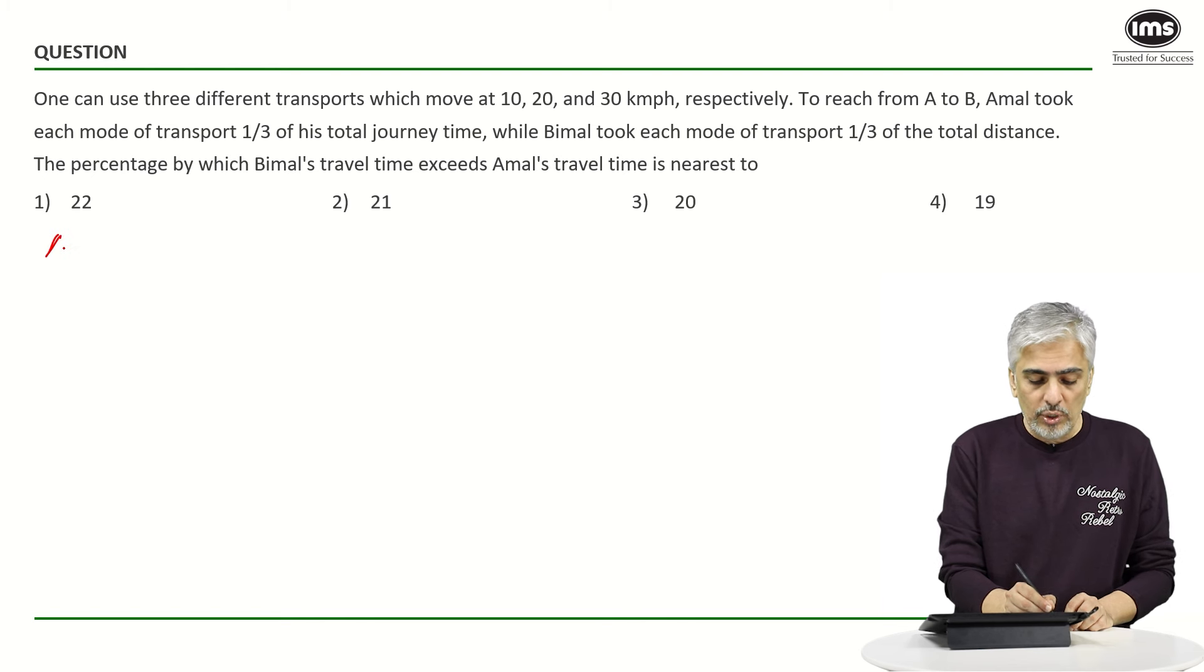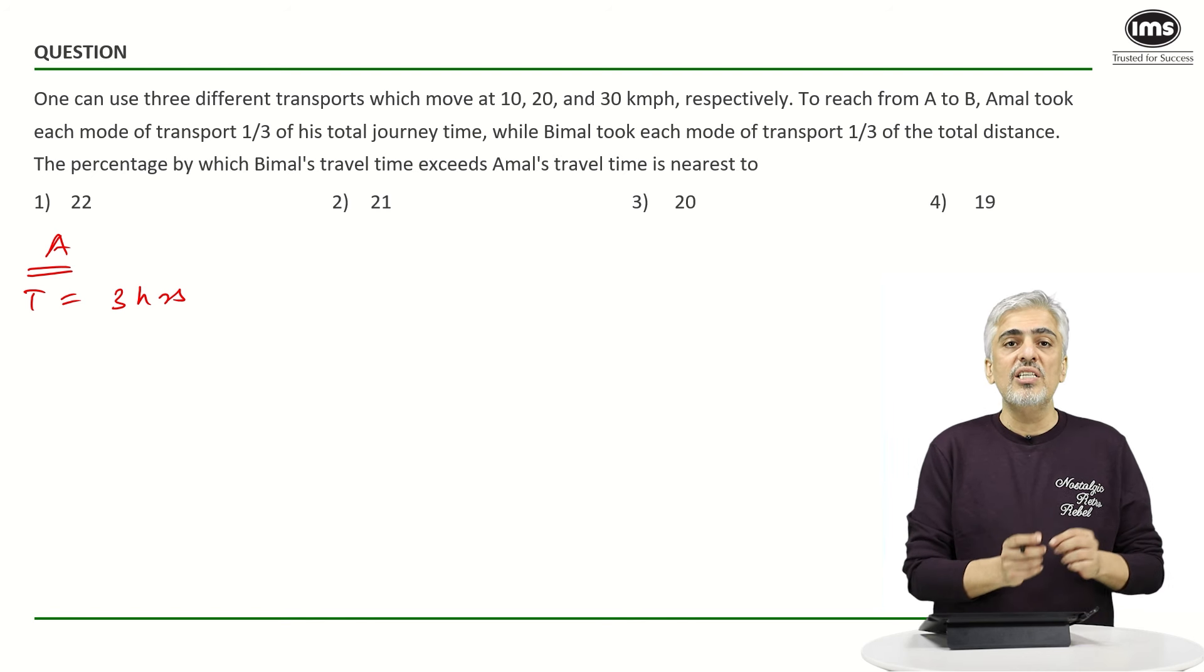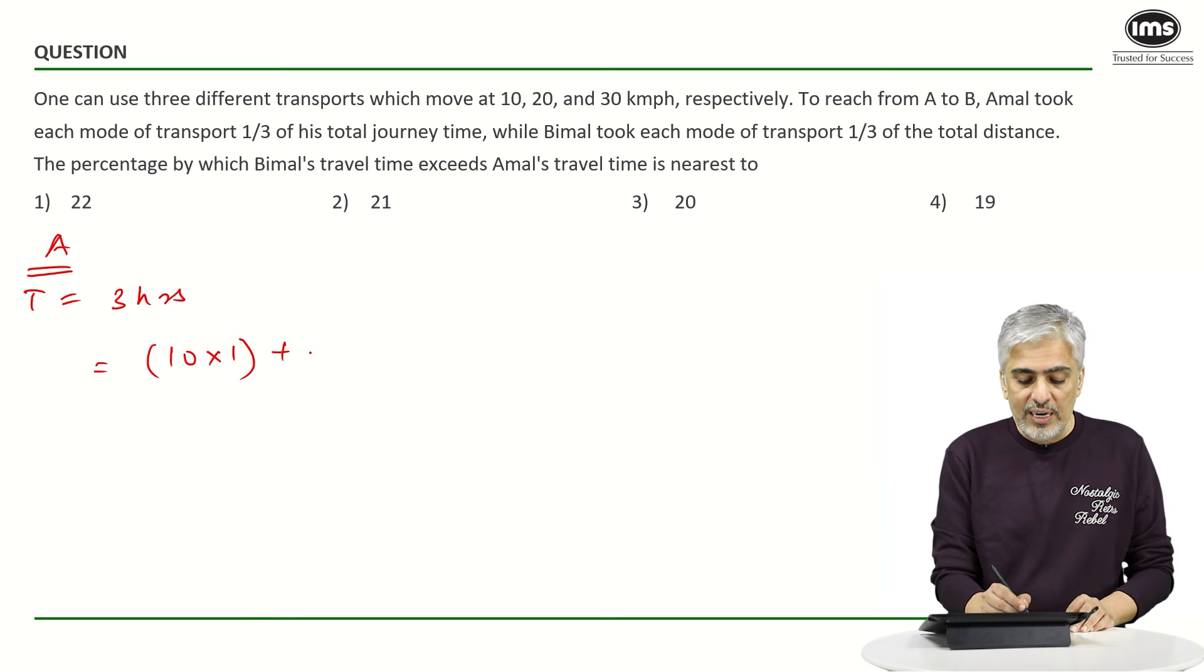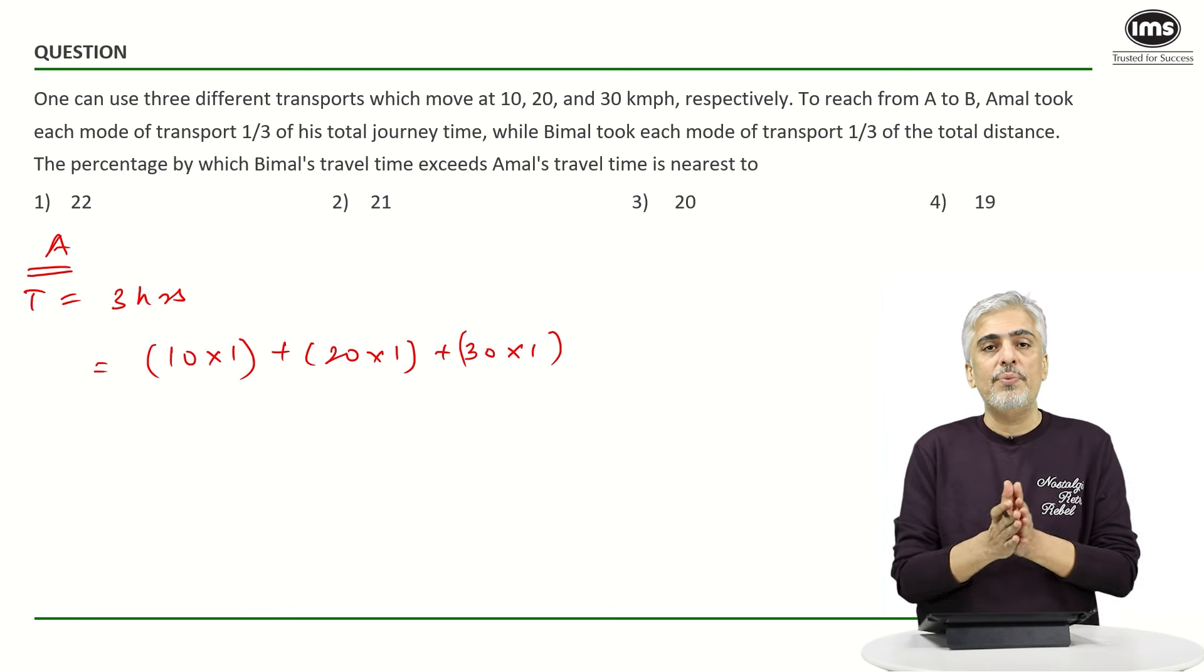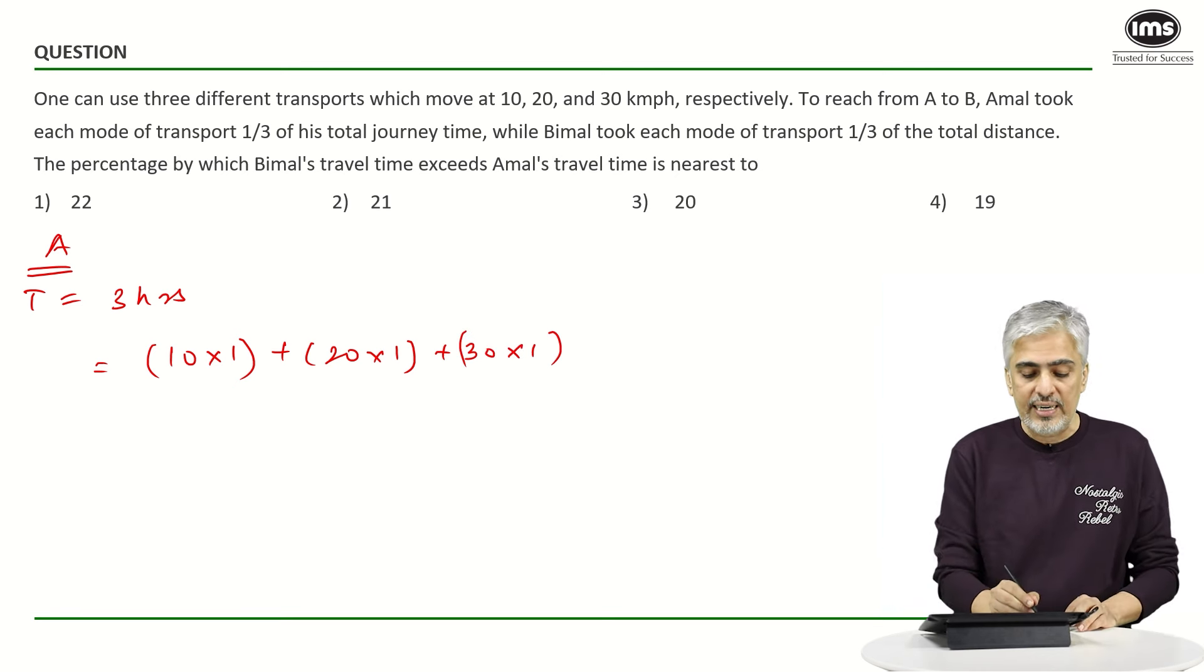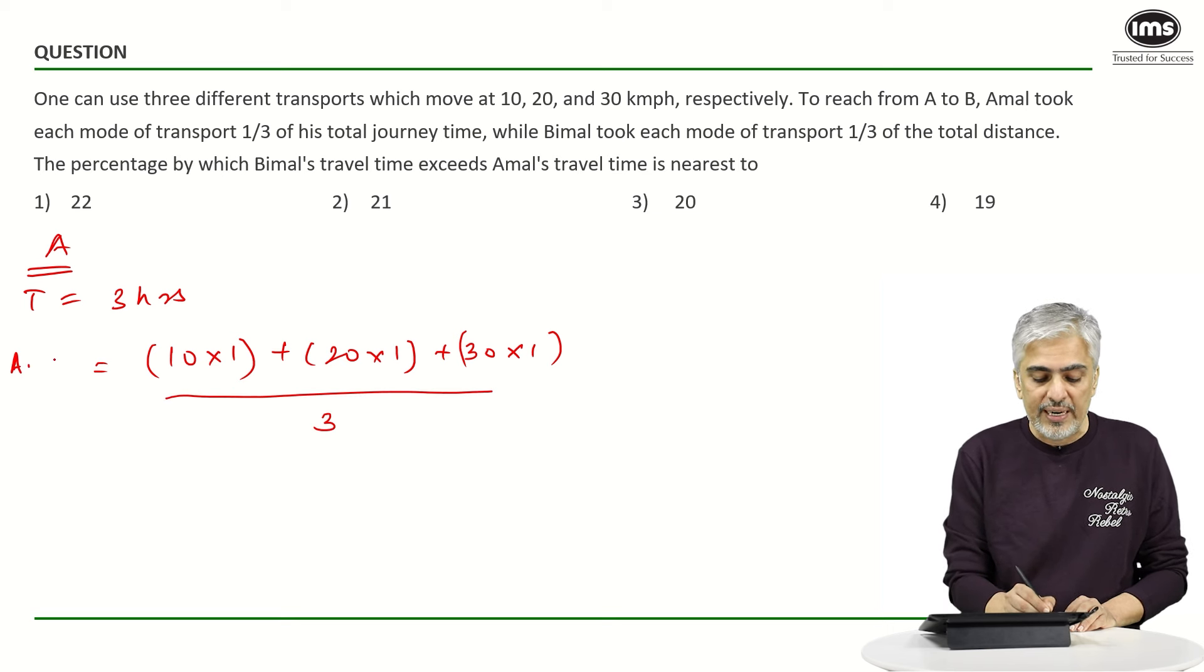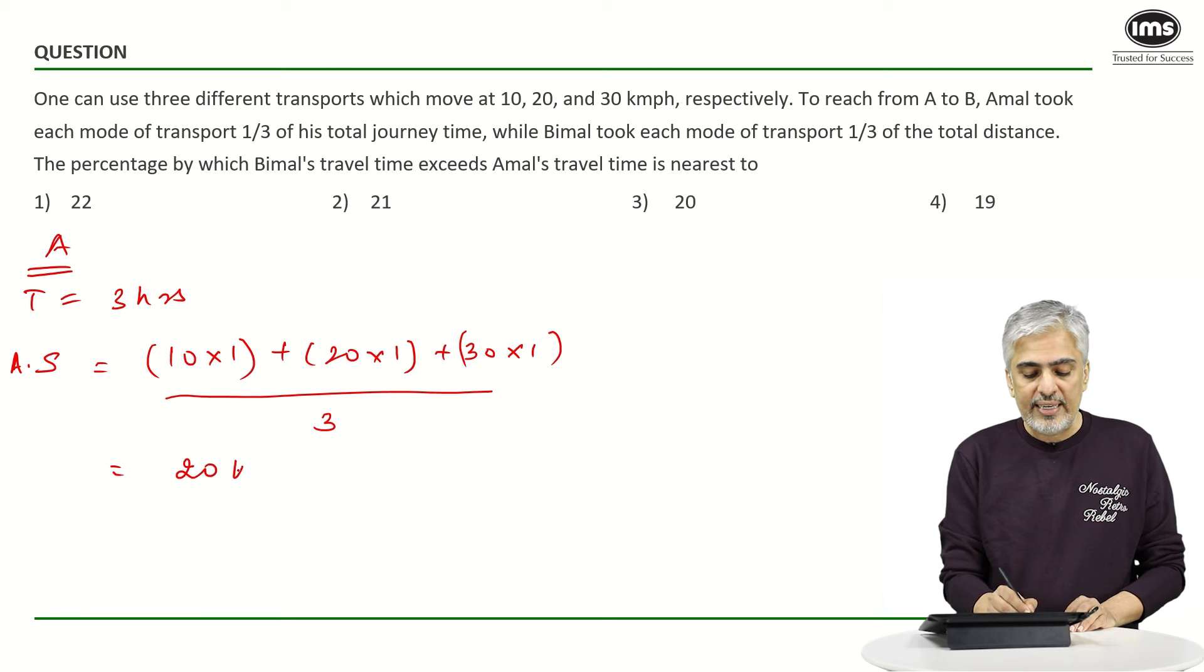So in case of Amal what I will assume is let's assume he took a total of three hours to complete the journey. Which means for the first one hour he was traveling at a speed of 10. So the distance covered by him is 10 into 1 is 10. For the second one hour he was traveling at a speed of 20 and then at a speed of 30. So the total distance covered by him is 10 plus 20 plus 30 which becomes 60. Divide by 3 to give me his average speed. So his average speed becomes 20 kilometers per hour. Let's leave it over here.